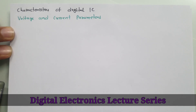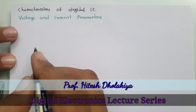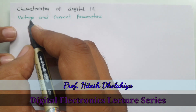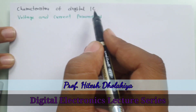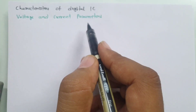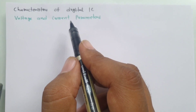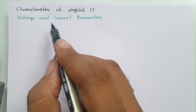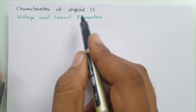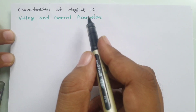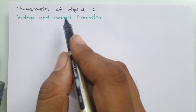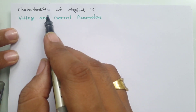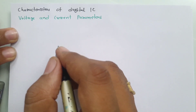Welcome to the digital electronics lecture series. Professor Ritesh Dholakya is going to explain the characteristics of digital integrated circuits, and specifically will discuss voltage and current parameters of digital integrated circuits, as well as the noise margin of digital integrated circuits.